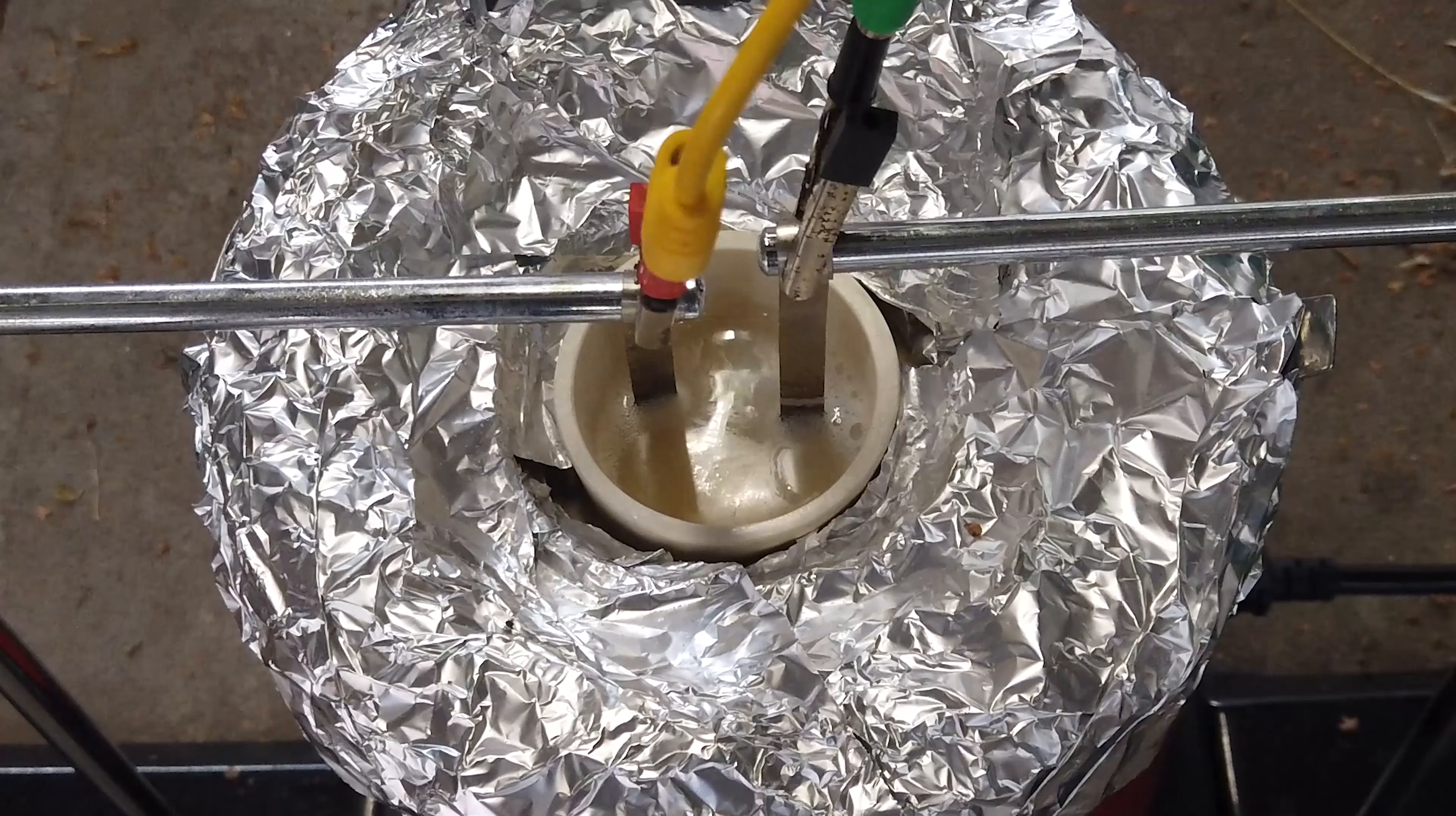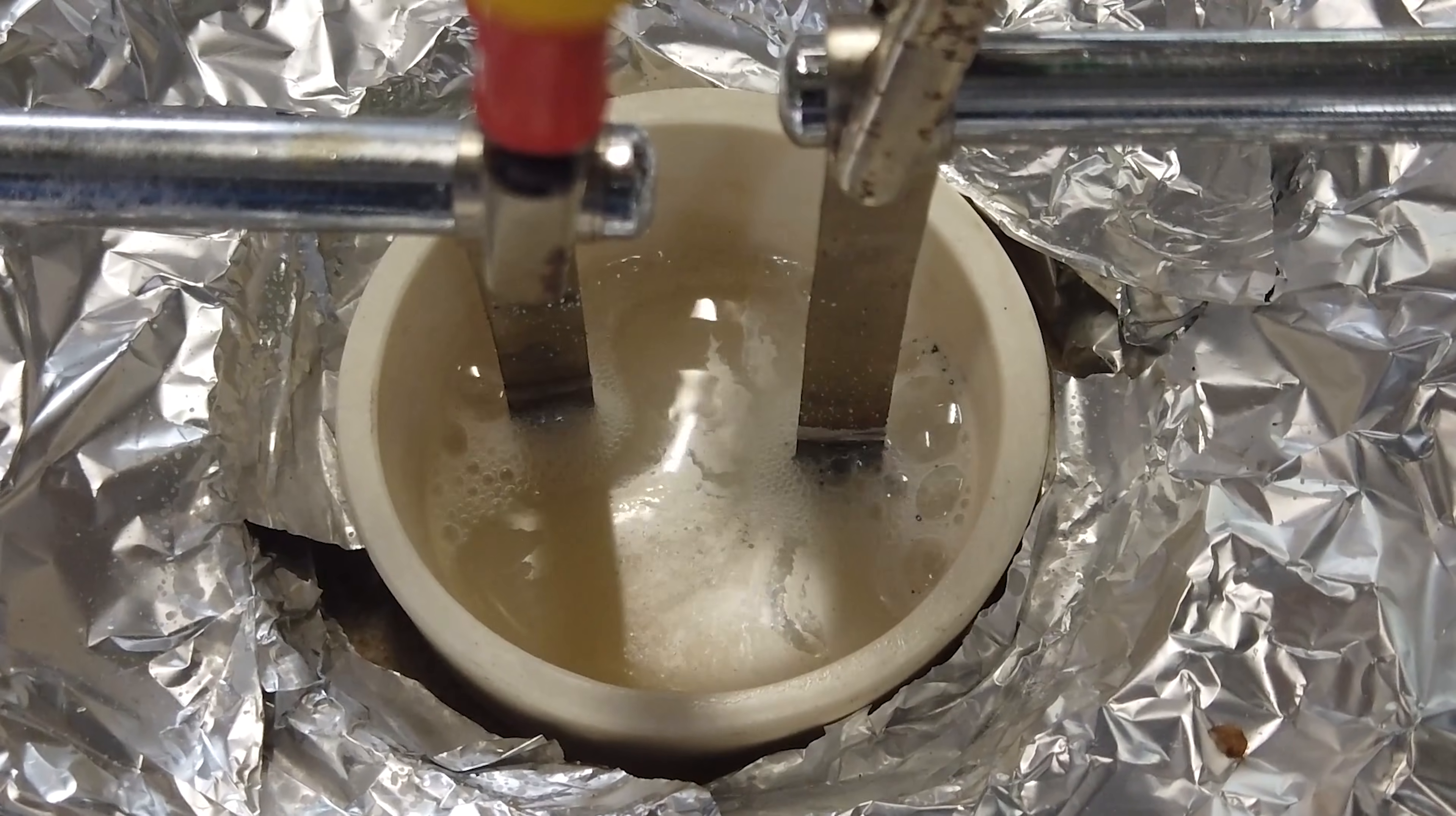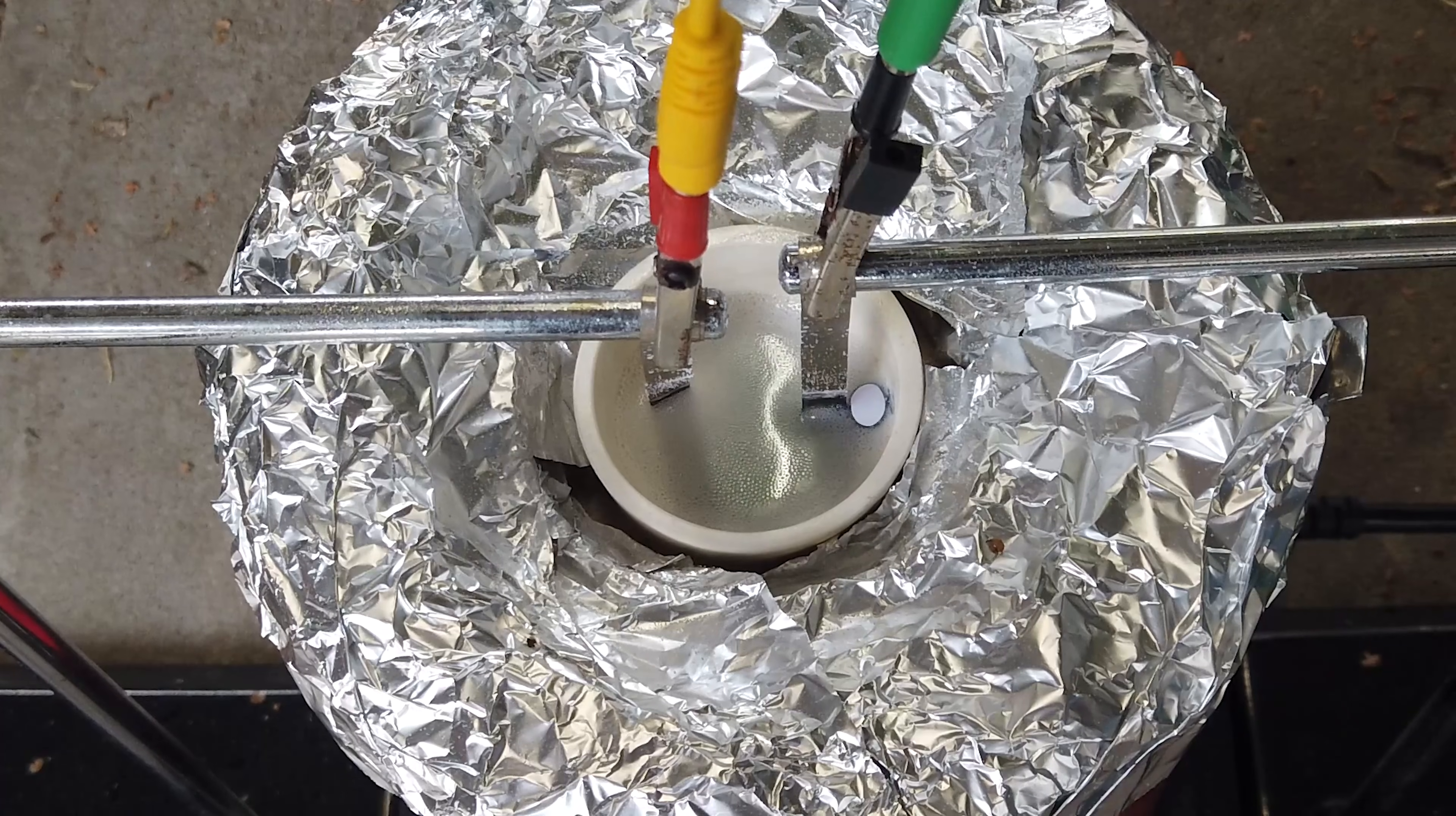These are nickel electrodes, supposedly inert to the electrolysis of sodium hydroxide, anode on the left, cathode on the right. I'm going to turn that off and get that bead of sodium out.